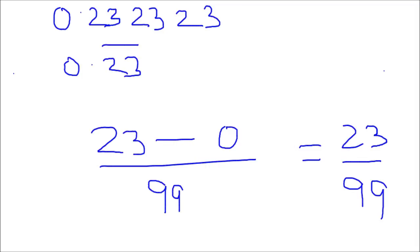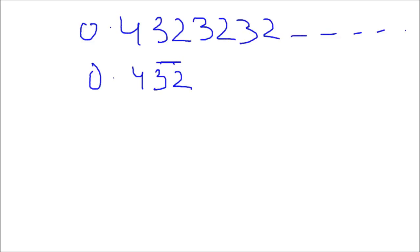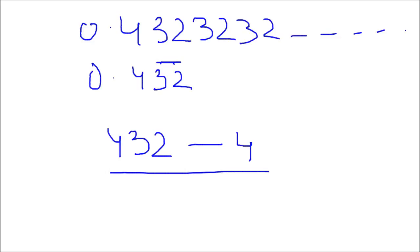Let me take one more example. Suppose the number is 0.43232 32 32 and so on. I write it as 0.4 with bar over 32, because 32 is the repeating part. The rational form is: 432 minus 4 (the digit without a bar), divided by 99 (two 9s, since 32 has 2 repeating digits) followed by 1 zero (since 4 is the one digit without a bar), giving denominator 990. After simplifying this, you get the proper rational form.